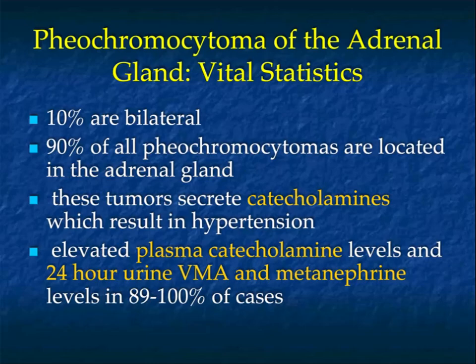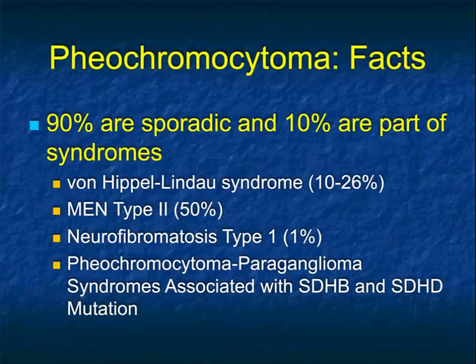These tumors secrete catecholamines, which can result in hypertension. Elevated plasma catecholamine levels and 24-hour urine VMA and metanephrine levels are elevated in the majority of cases. The majority of pheochromocytomas - better than 90% - are sporadic, and about 10% are part of syndromes: Von Hippel-Lindau, MEN type 2, neurofibromatosis type 1, and pheochromocytoma-paraganglioma syndromes.